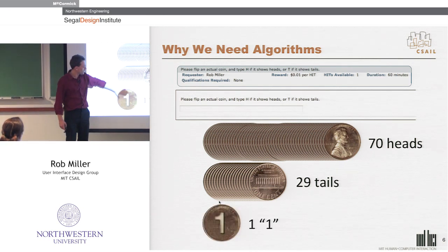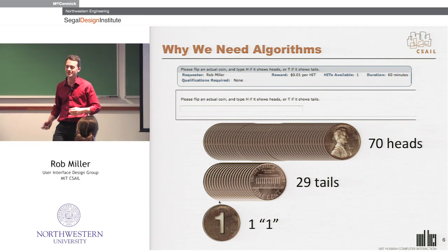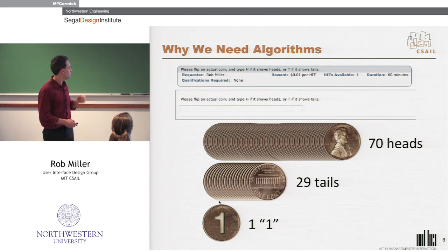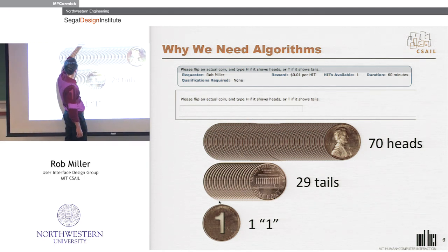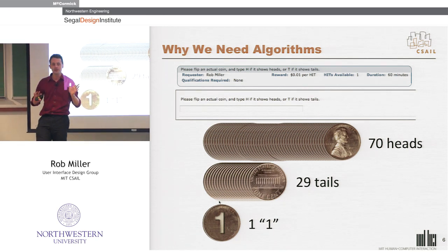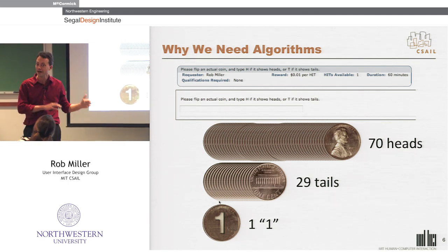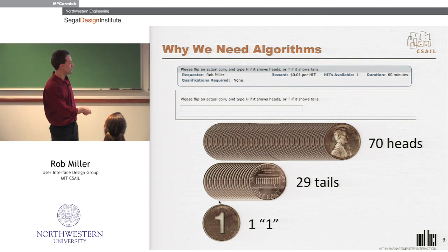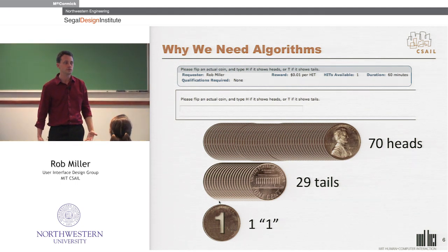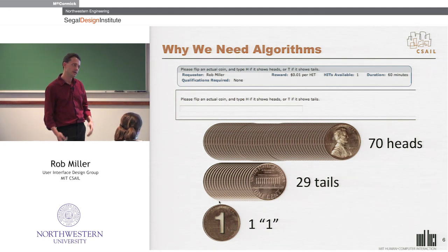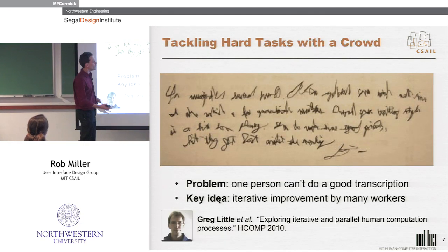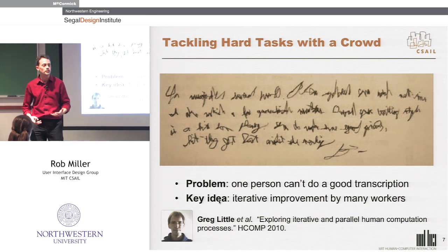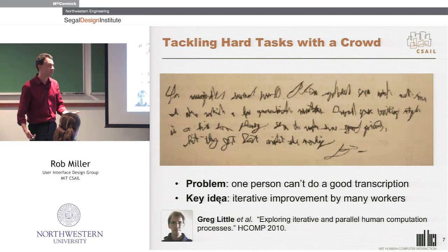We tried variations — if you say 'type T if it shows tails' and switch the order of the instructions, the effect goes away and it becomes 50-50. So you can perform lots of psychological experiments on Mechanical Turk. But from an engineering point of view, this is noise. That's the problem you immediately face with crowd computing: the human beings in the system are not going to behave the same way as the software components we're used to programming. We have to build algorithms that are tolerant of this kind of noise.